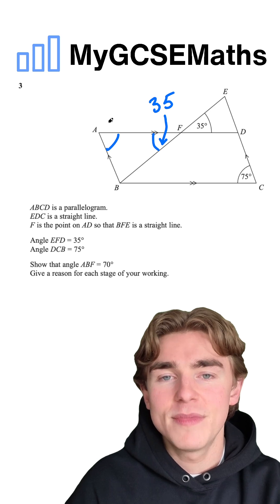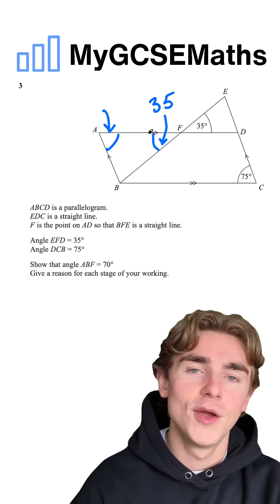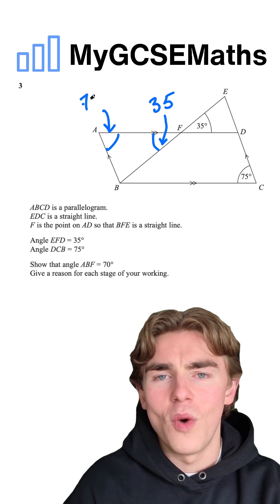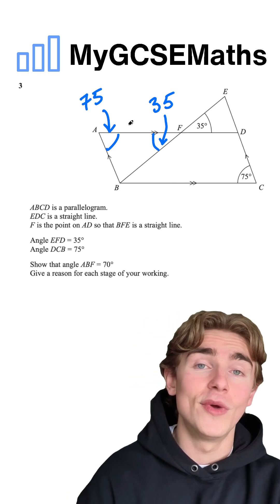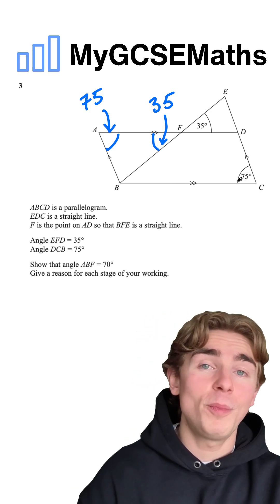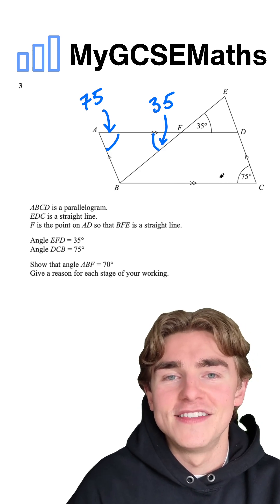Now, what about this angle here? Because this is the next one we want if we want to work out angle ABF. Well, we can actually say that this angle is 75. Now, why can we say that it's 75? We can say that it's 75 because this angle here is 75 and opposite angles in a parallelogram have to be the same. So this angle here is 75.